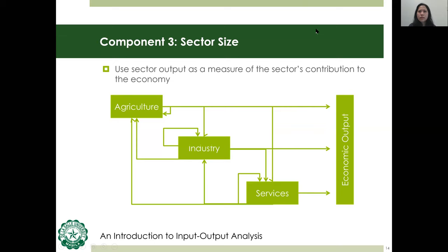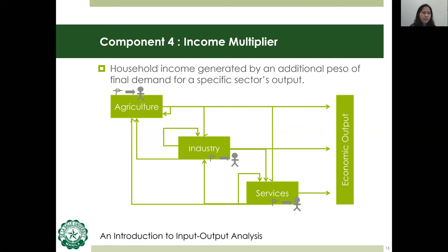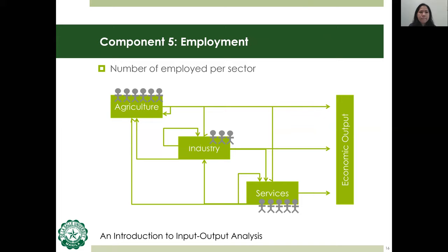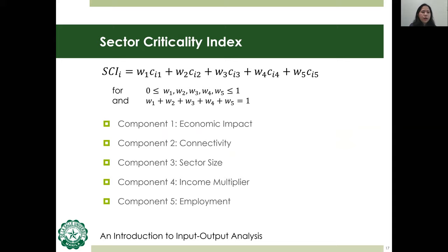For the fourth component, we have the income multiplier, which shows the household income generated by an additional peso of final demand for a sector's output. This will then increase demand for other sectors' output, causing a ripple effect. The fifth component is employment for each sector, measured by the number of persons employed, showing the number of people dependent on the specific sector for livelihood. Overall, the sector criticality index is a weighted sum of these five components: economic impact, connectivity, sector size, income multiplier, and employment.